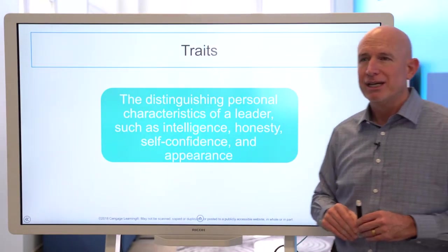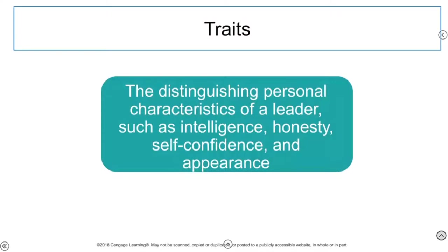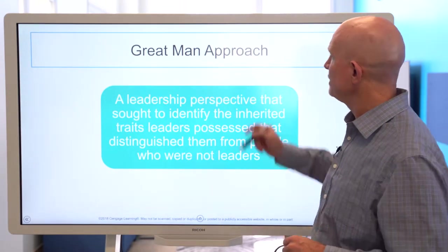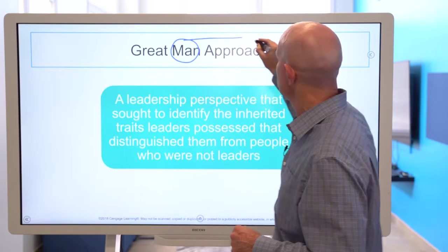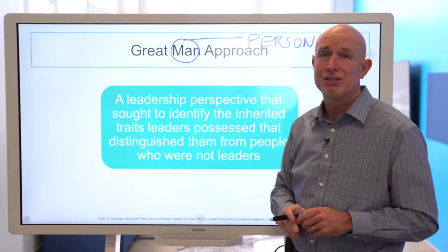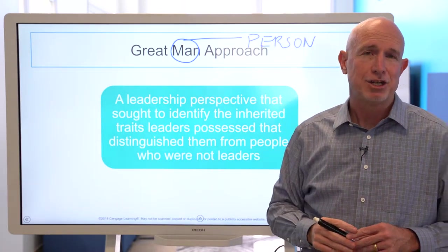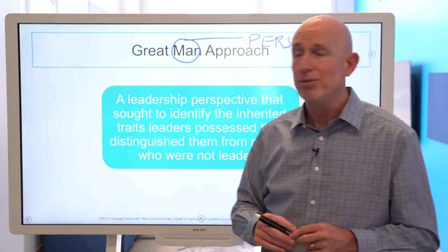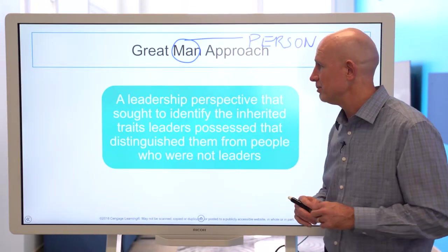So what is a trait? A trait is the distinguishing personal characteristic of a leader, such as intelligence, honesty, self-confidence, and appearance. We all know leaders who have certain distinguishing traits. Henry Stogdill and researchers titled this the great person approach — updated from 'great man' — because researchers went on to look at great leaders like Joan of Arc and others who exemplified this trait approach in both male and female examples throughout history.